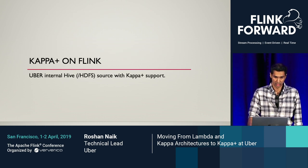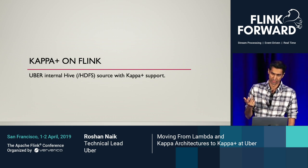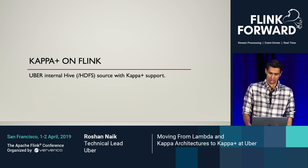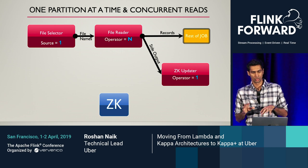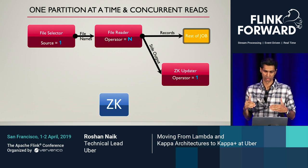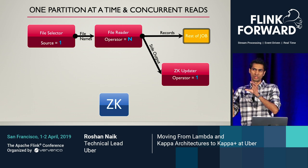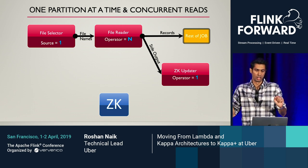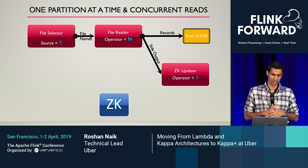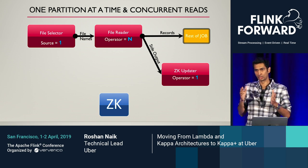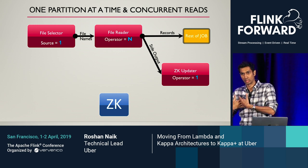At Uber, we have an implementation of a Hive/HDFS data source for Flink which supports this processing model. In the job graph, three red boxes are the Hive source and the orange/yellow one is the rest of the job. The Hive source is actually three components: a file selector, file readers, and a ZooKeeper updater. The file selector is fixed to parallelism of one, as is the ZooKeeper updater. The user can change the parallelism on the file reader for concurrency.